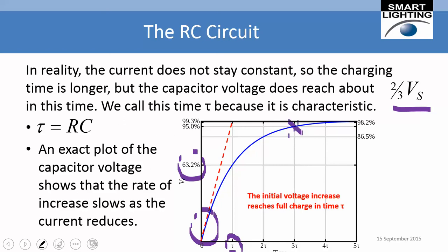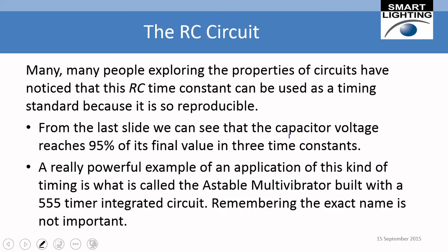We get practically all the way there — 95% — in about three time constants. So tau equals rc is a very good measure of charging time even though the current isn't truly constant. Many people exploring circuit properties have noticed that this RC time constant is highly reproducible and can serve as a timing standard, which leads us to the astable multivibrator built with a 555 timer chip.